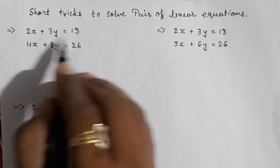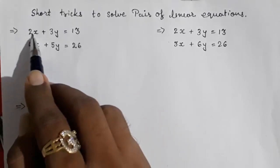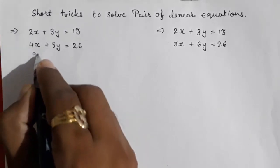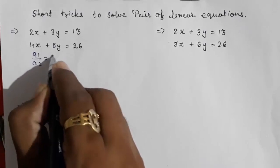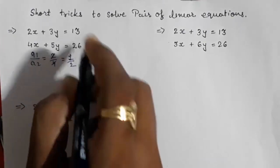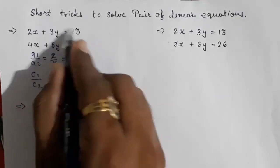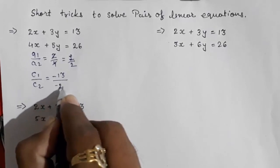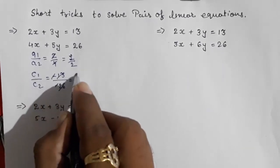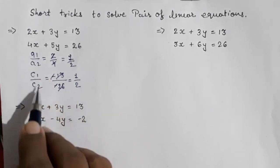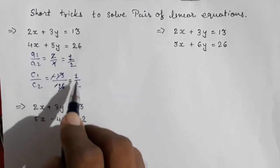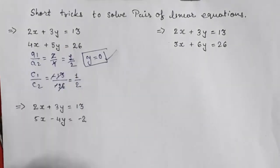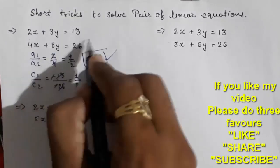By looking at the equation only, you can first come to know the ratios. Here a1/a2 is 2/4, which gives 1/2. And c1/c2, if you arrange it in standard form, becomes -13/-26, which also gives 1/2. So whenever a1/a2 and c1/c2 are both equal — here both are 1/2 — you will directly get y = 0.